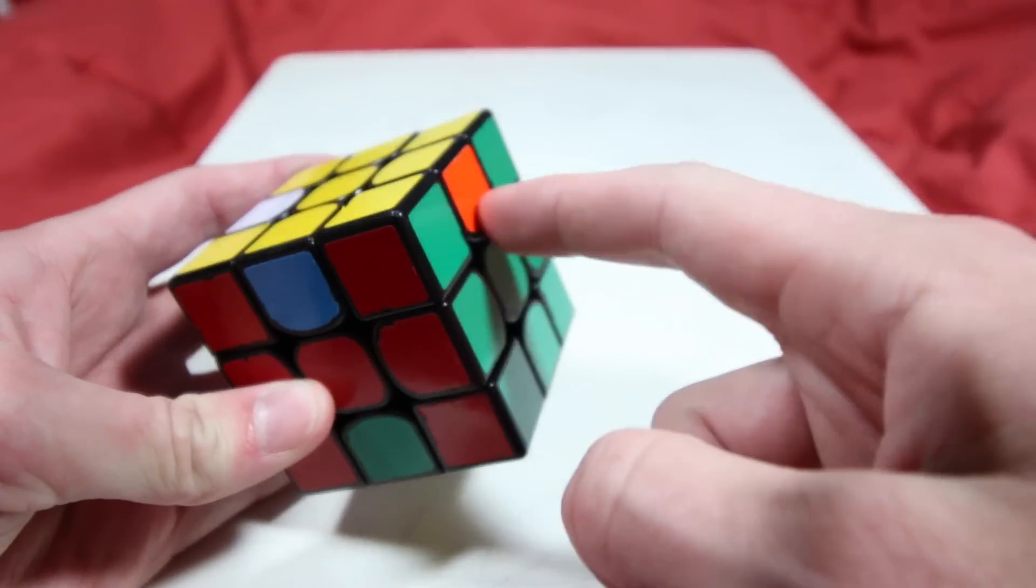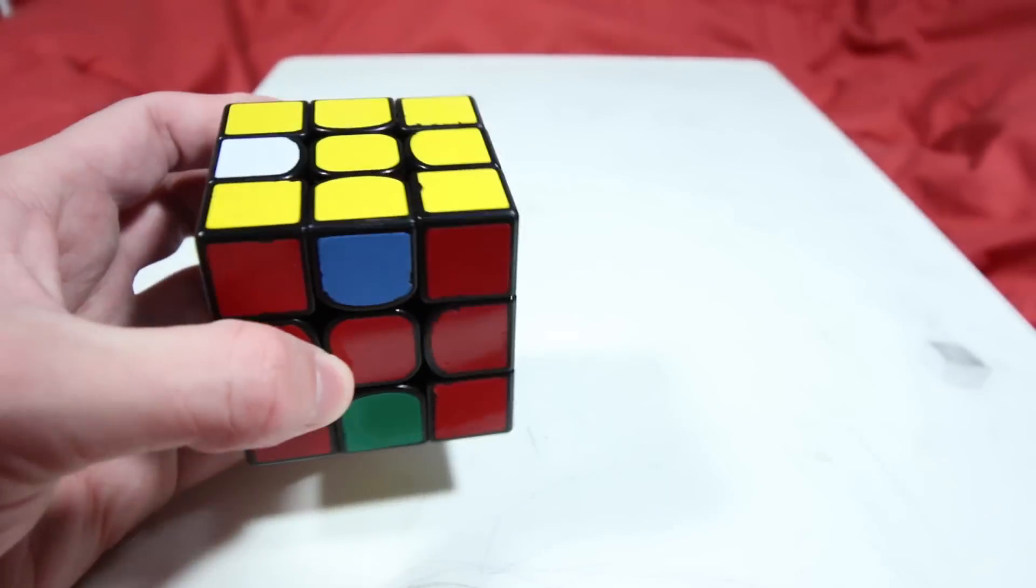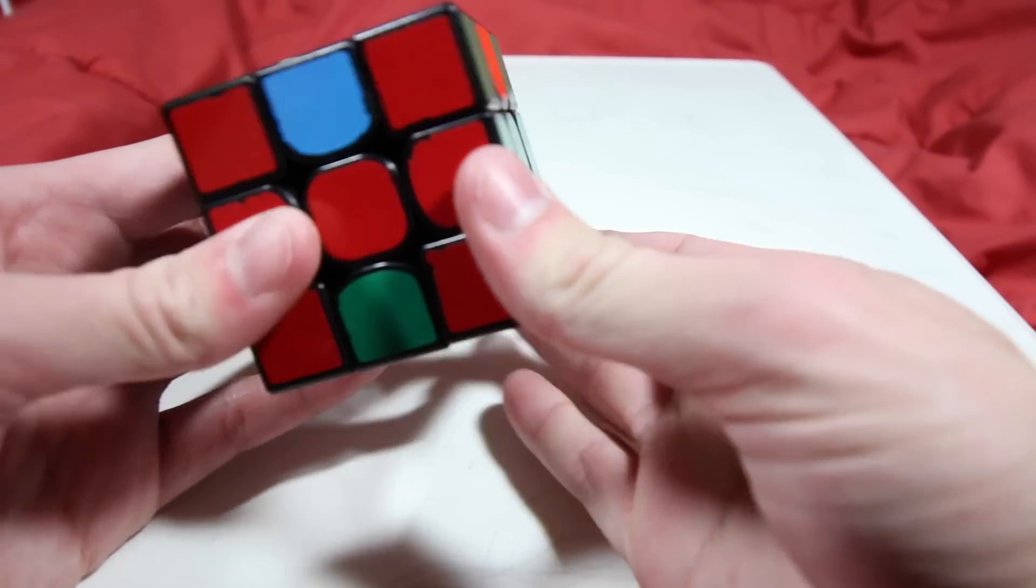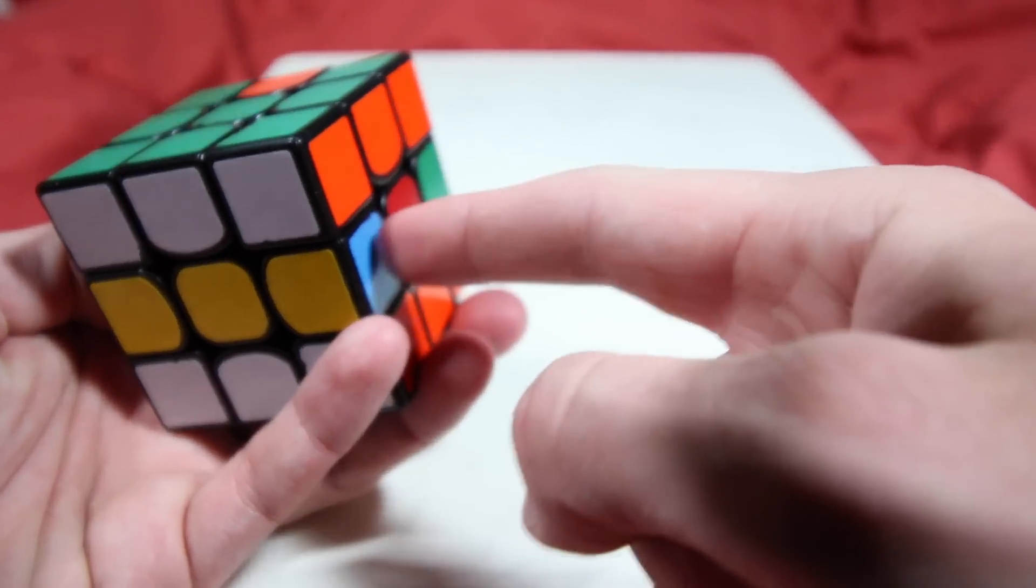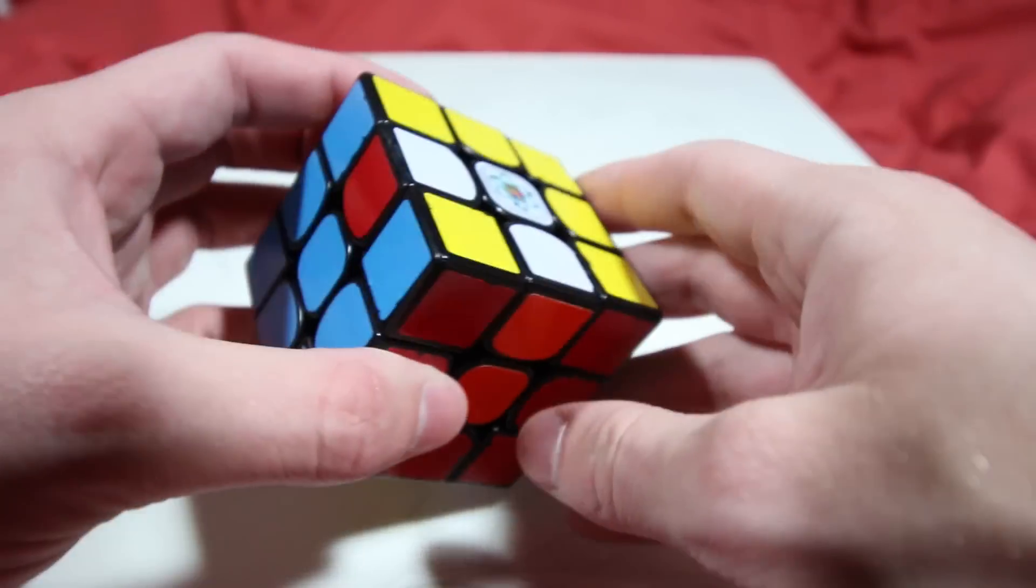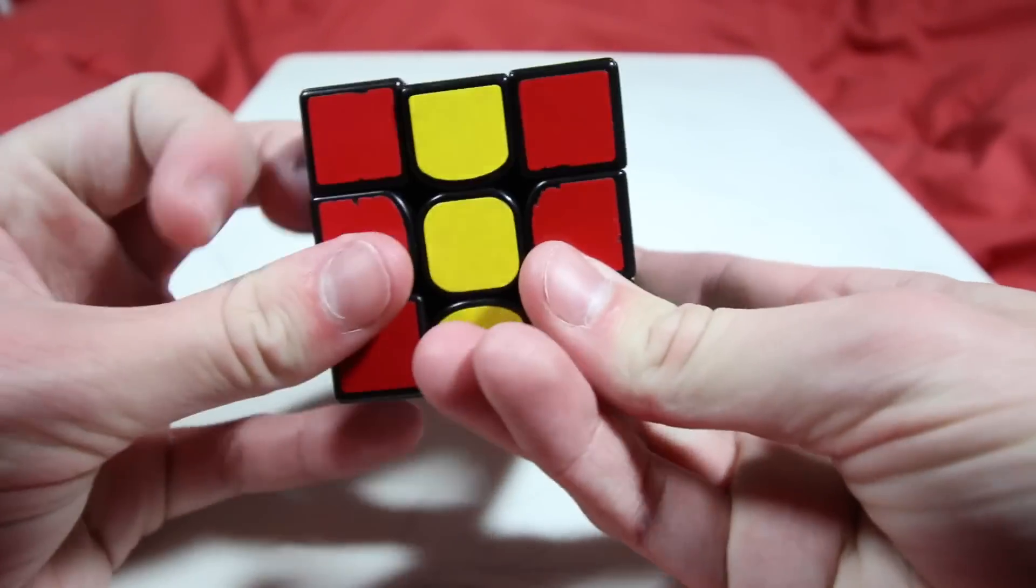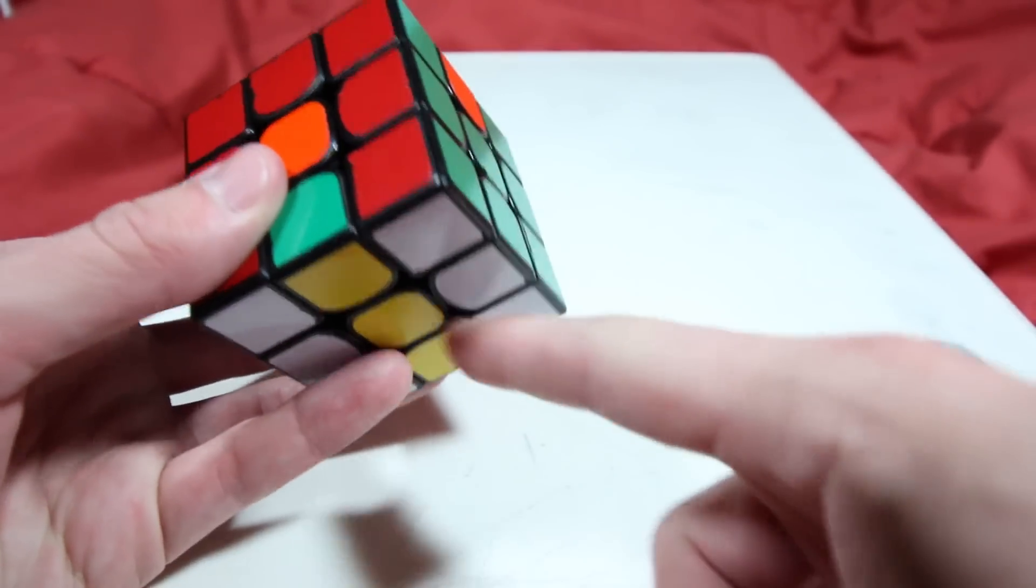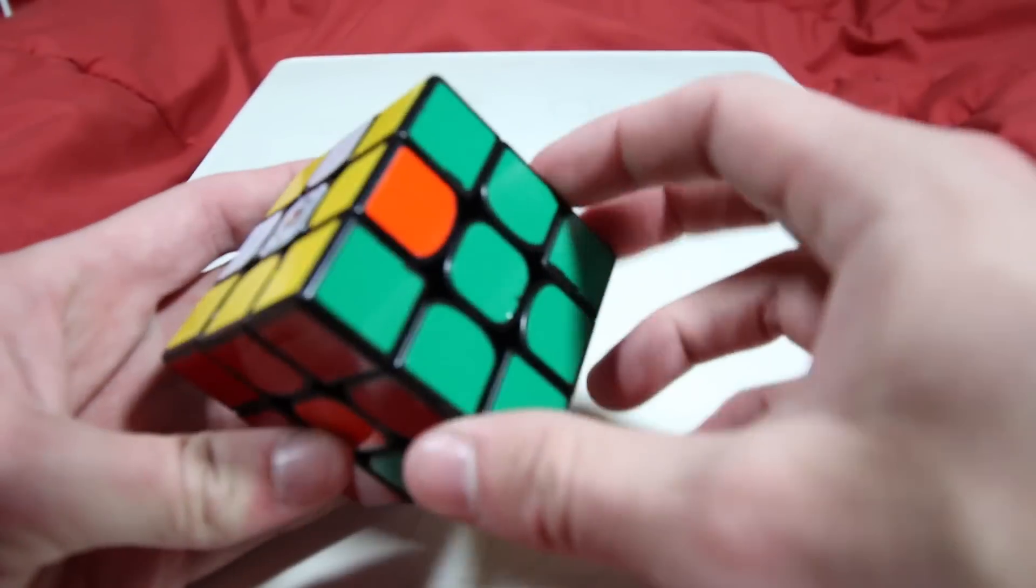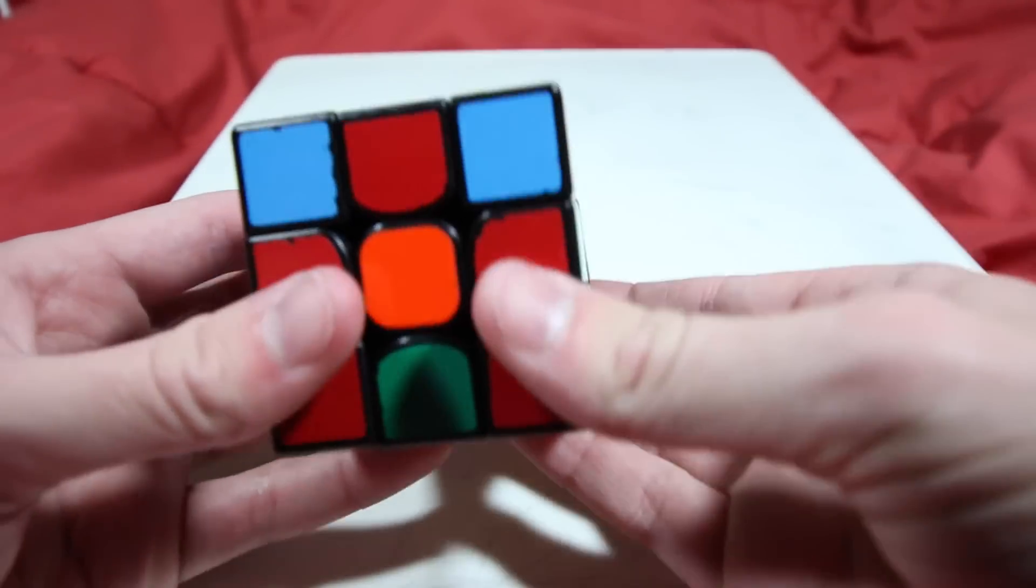From here, we'll continue using a beginner's version of Roux LSE, so just take note of your right and left center colors, and then do an M2. Using the M'U2M technique that we learned earlier, make it so that your D layer edges correspond to your left and right centers. Then, all you have to do is make sure that when you do your M2 to put your white center back on the bottom, you're also putting those edges between the corners of their color.